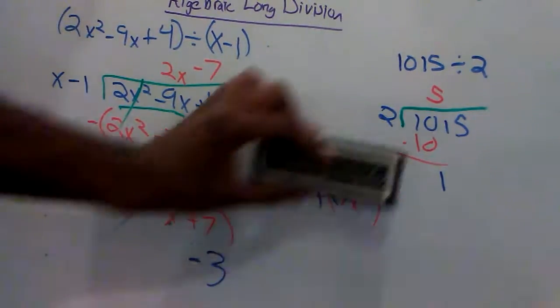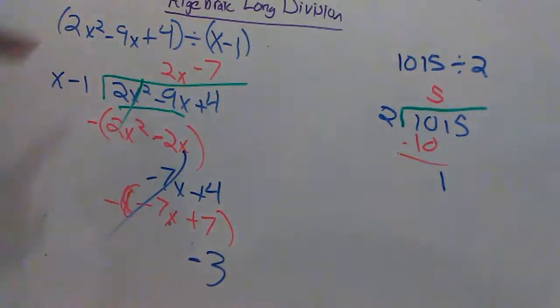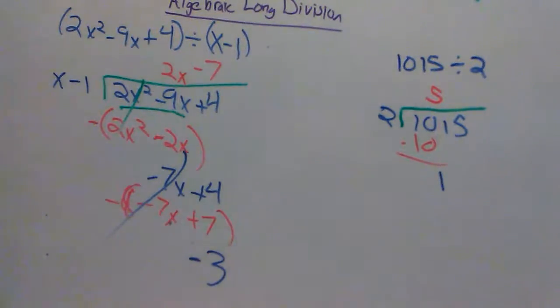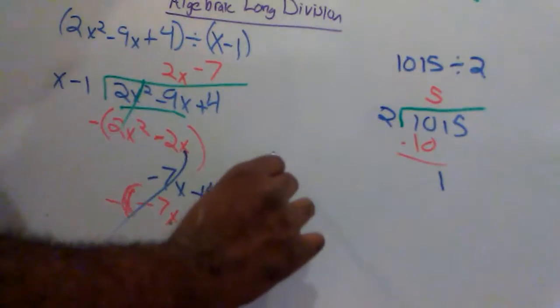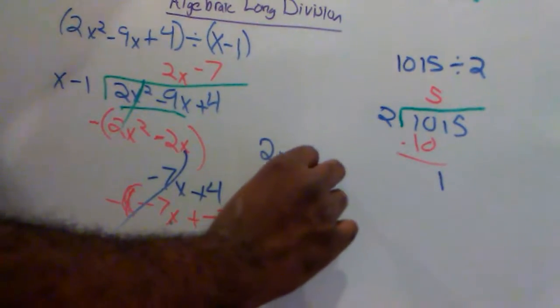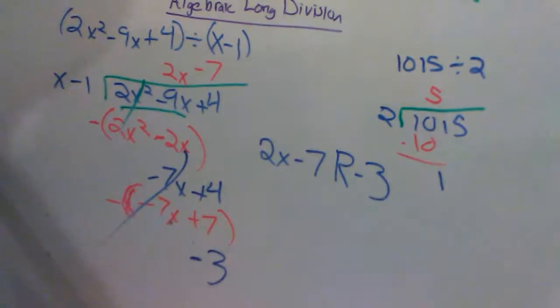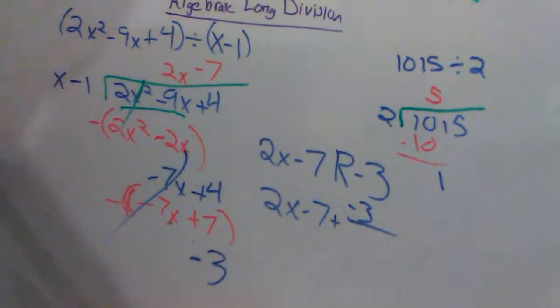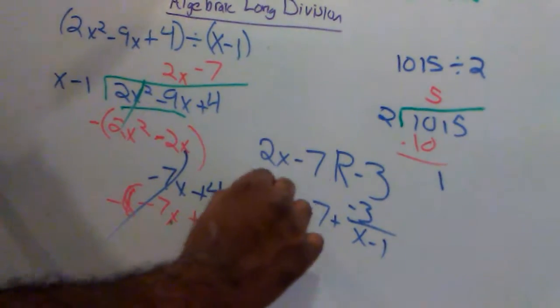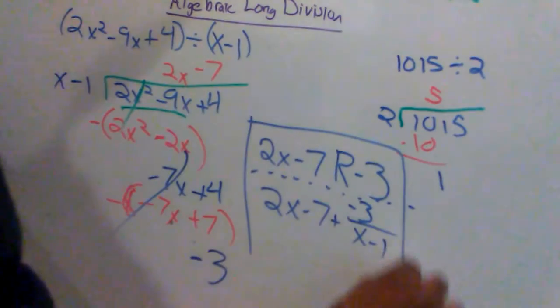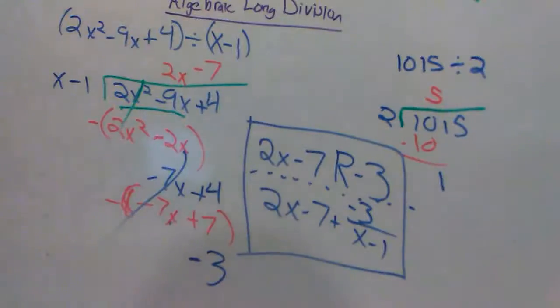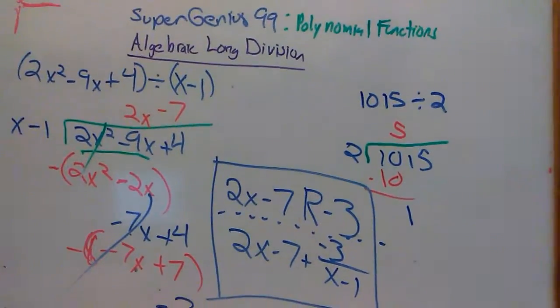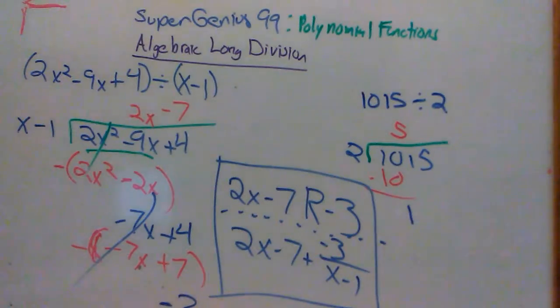So you have two ways of stating the result. This 2x squared minus 9x plus 4 divided by x minus 1 has two possible answers. You can say, either 2x minus 7 remainder of negative 3 or 2x minus 7 plus negative 3 over the divisor x minus 1. Those are your two answers to the problem. Okay, I hope this helps. It's been a video lecture from Supergenius99 over polynomial functions, algebraic long division. Mark Smithers, thank you for watching.